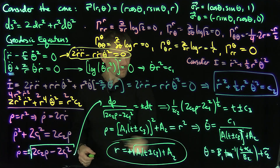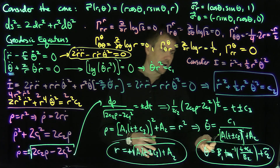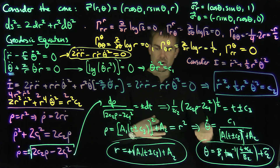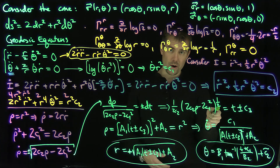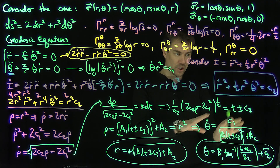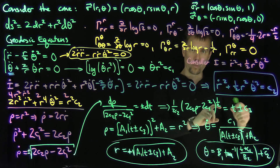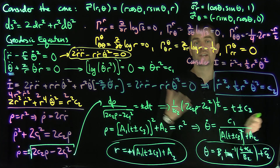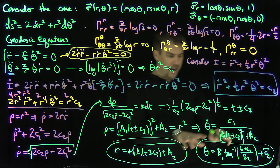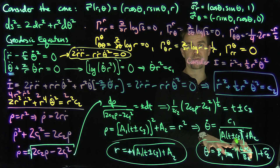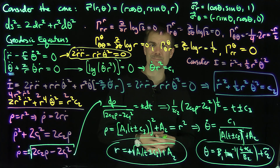So r and theta as functions of t parameterize all the geodesics on the cone. Up to constants, r is the square root of time and theta is the inverse tangent of the square root of time. By plotting these trajectories for different constants, we get all the geodesics on the cone. Thank you very much.